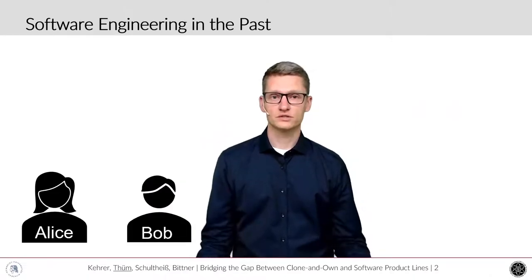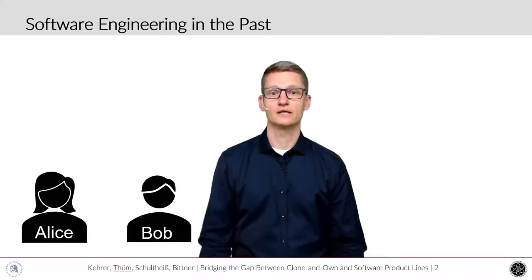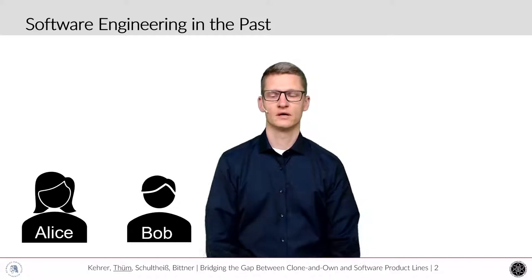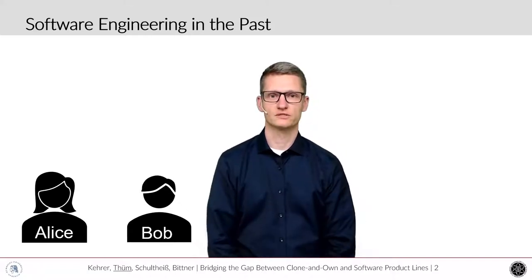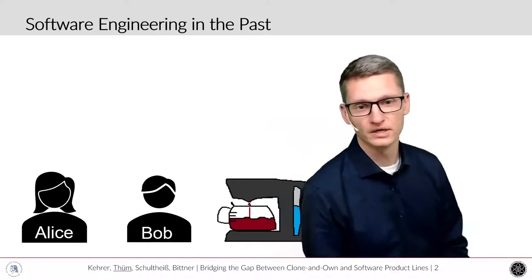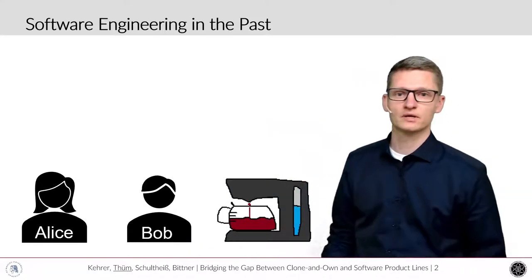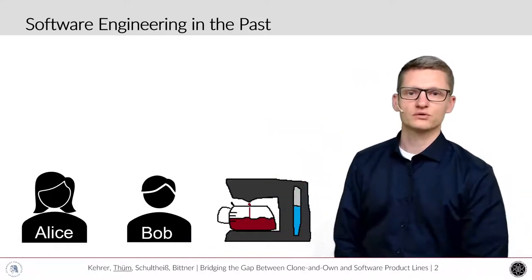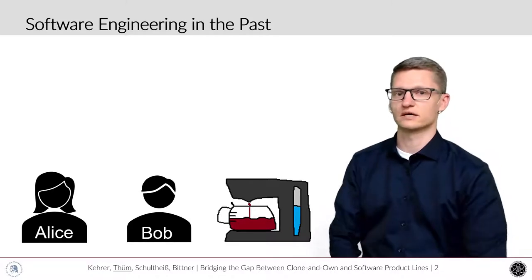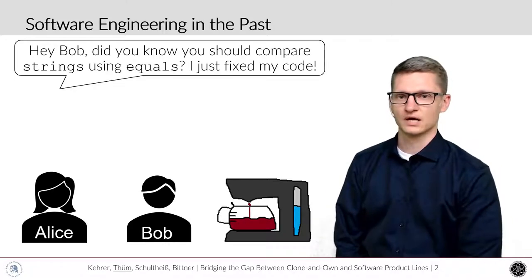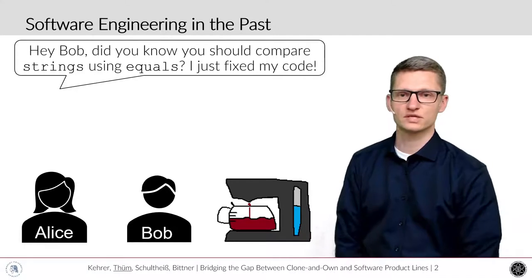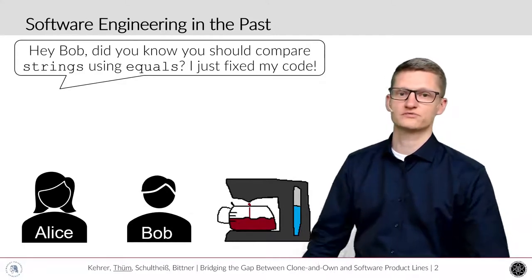A common situation in software engineering is that Alice and Bob meet in the kitchen. Alice and Bob are Java developers. Because they need coffee and as coffee needs some time, they spend some time talking to each other. Today Alice got great news. Hey Bob, did you know you should compare strings using equals? I just fixed my code.